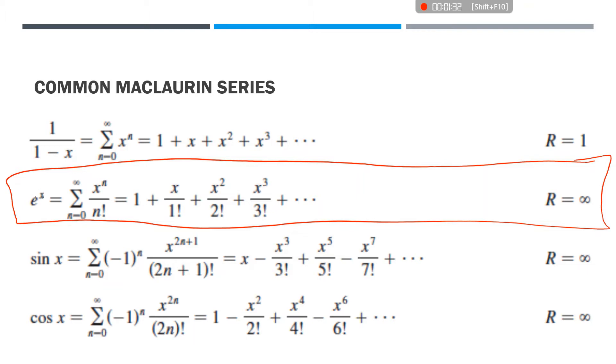If I wanted to rewrite this e to the x so that my n was starting at 1 instead of starting at 0, what would my series be? It should be n minus 1. Everything stays the same except this would be n minus 1. Awesome.